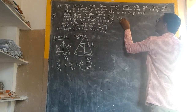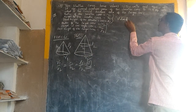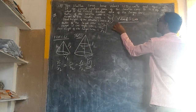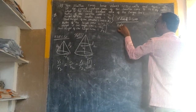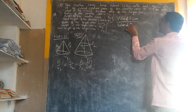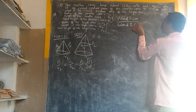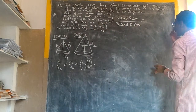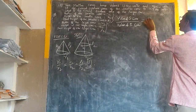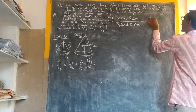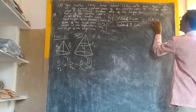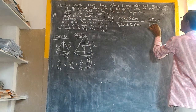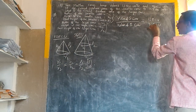Volume of the smaller cone divided by the volume of the bigger cone: the smaller cone has volume 12π cubic units and the bigger cone has volume 96π cubic units.